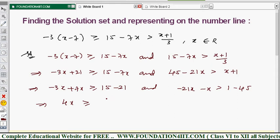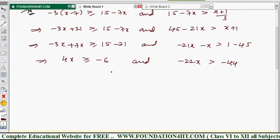So from this you can simplify. Minus 21 minus 6 is minus 22x, greater than 1 minus 45 is minus 44. We will simplify now.